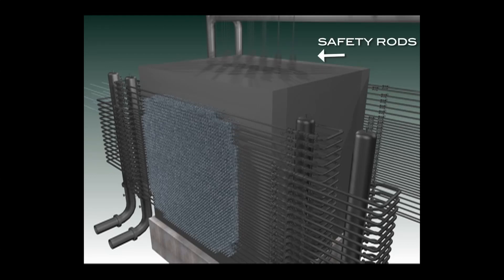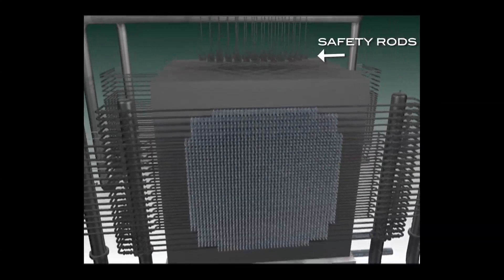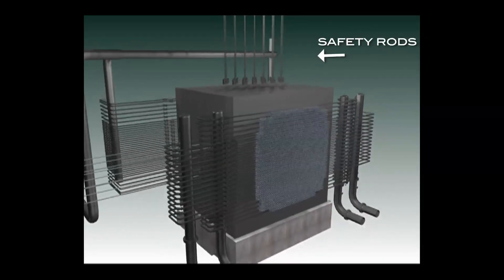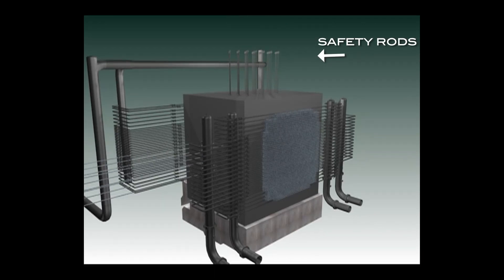The 29 safety rods are now moved into position. The rods hang above shielded fittings in the top shield, and if needed can be dropped through holes in the shields and the graphite into the reactor.